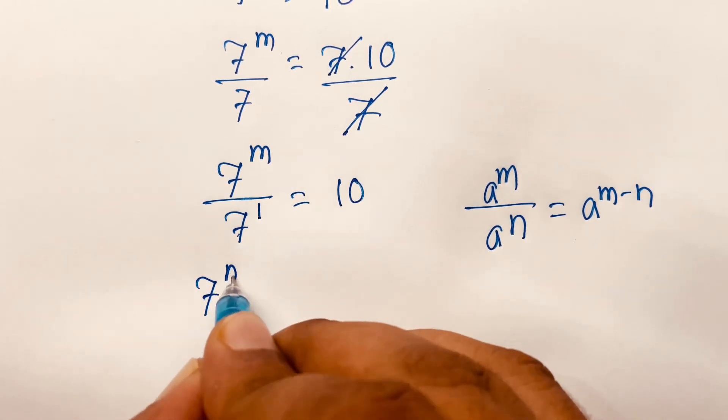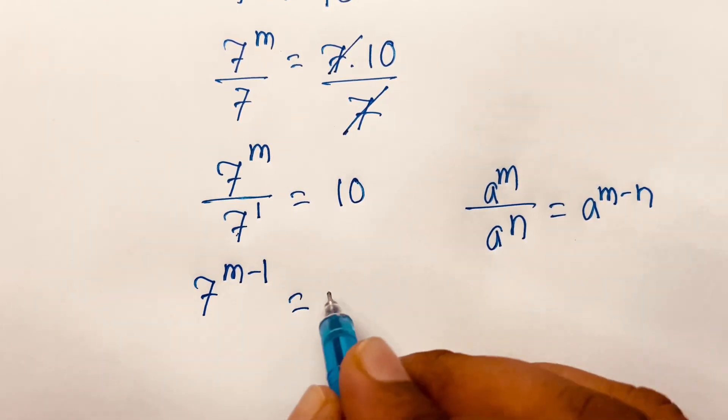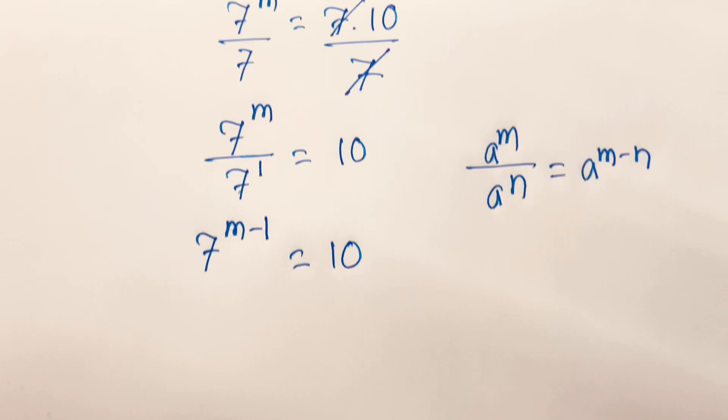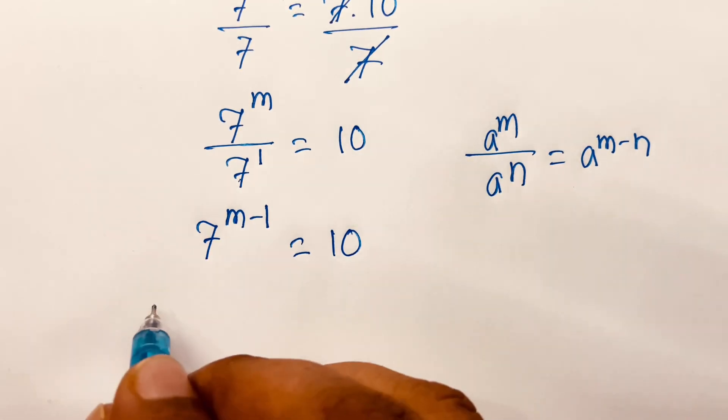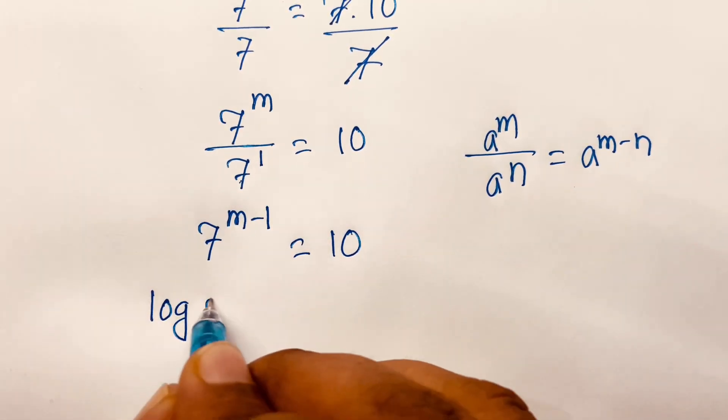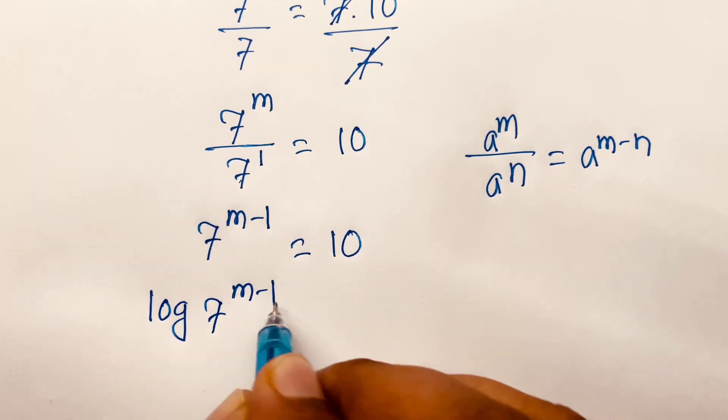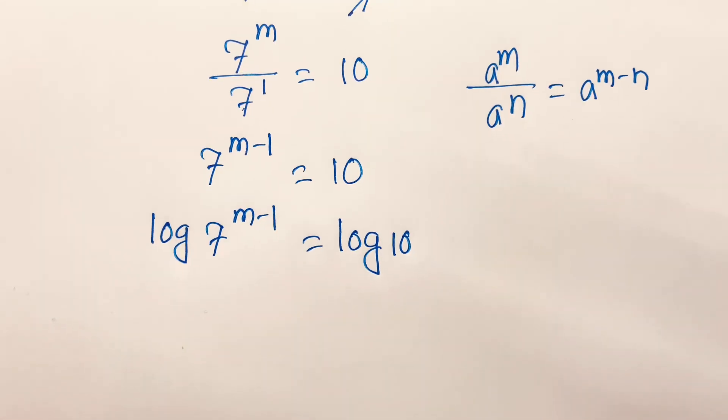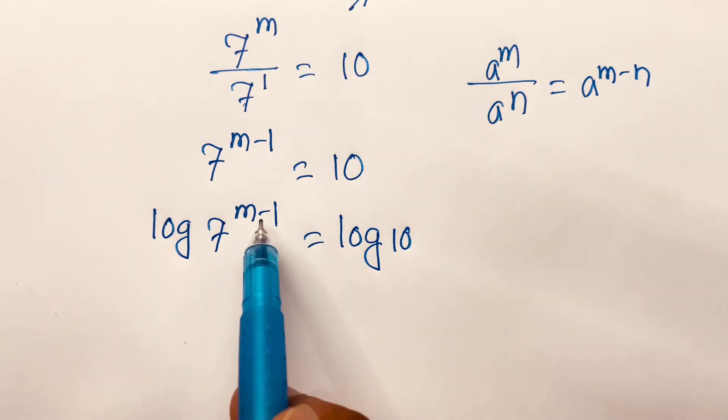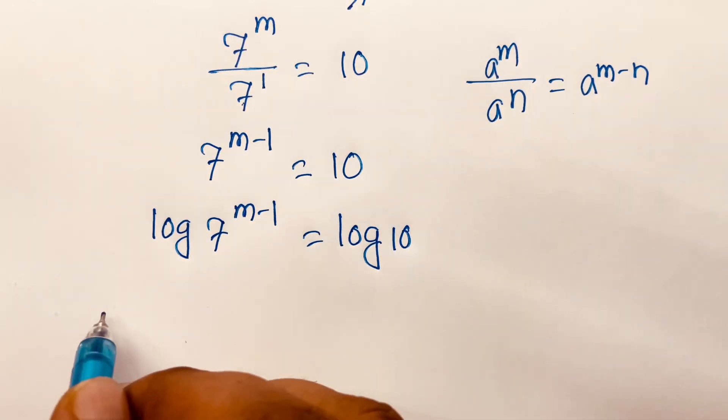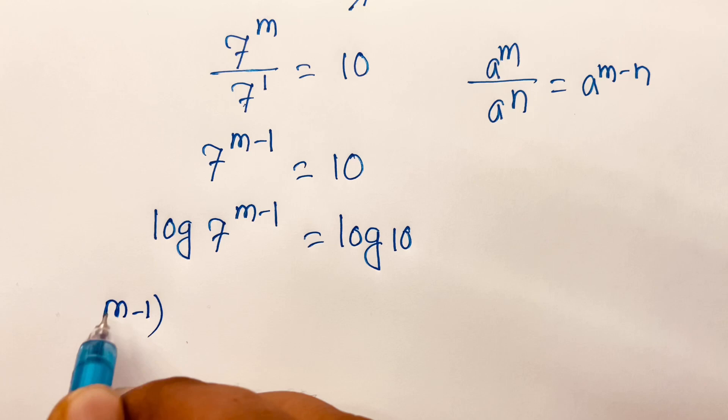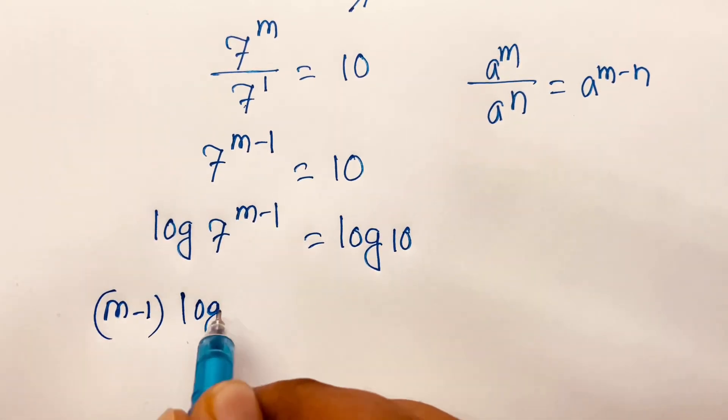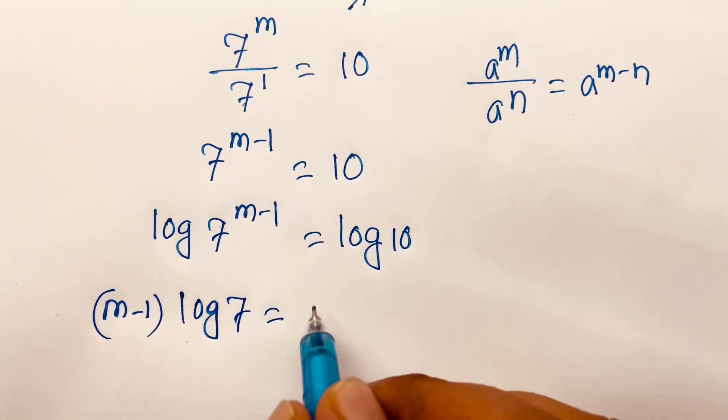Then if I use log on both sides, I can say log(7^(m-1)) = log(10). According to logarithm rules, the exponent moves to the front, so it will be (m-1) times log 7 equals log 10.